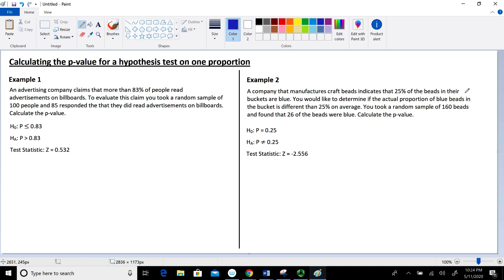In this video we're going to focus on calculating the p-value for a hypothesis test on one proportion. We'll look at two different examples to help you understand how to identify whether the test statistic is a lower bound or an upper bound when using the TCDF function on your calculator or looking it up in a table.